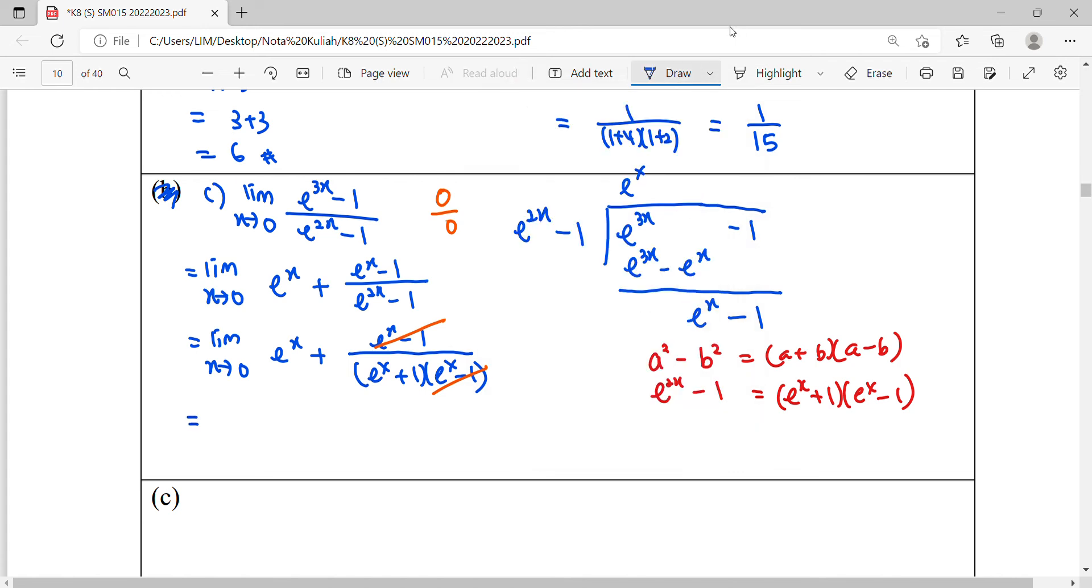Then we figure out this limit again. If your X is equal to 0, the numerator already simplified, you get 1. So here is E 0 plus 1. So 1 plus 1 over 1 plus 1. So it will be equal to 3 over 2.